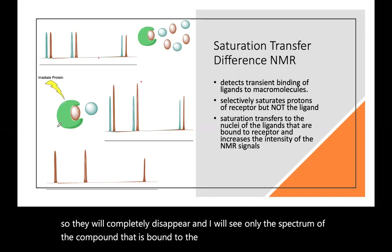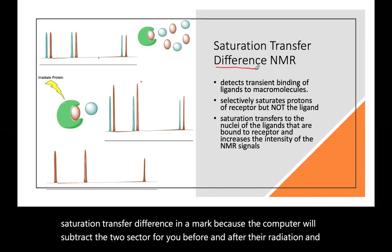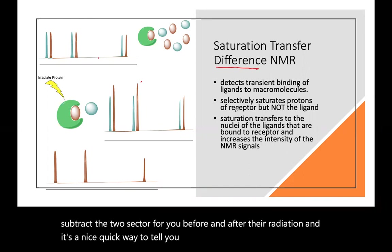And I will see only the spectrum of the compound that is bound to the macromolecule. So this is called saturation transfer difference NMR because the computer will subtract the two spectra for you before and after the irradiation. And it's a nice quick way to tell you whether something is bound into a receptor.